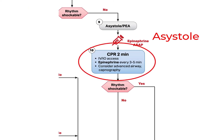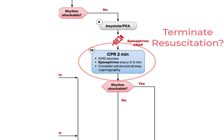We do CPR, establish IV access, and give one milligram of epinephrine as early as possible, repeating it every three to five minutes during our two-minute cycles of CPR. We can consider an advanced airway, but we should also be seriously evaluating the appropriateness of resuscitation at all in asystole. Quickly determine the DNR status, the downtime prior to CPR, and other details relevant to making a decision regarding terminating resuscitation.